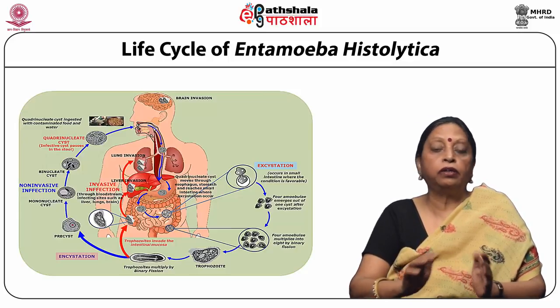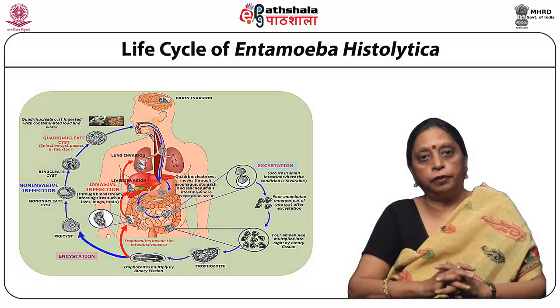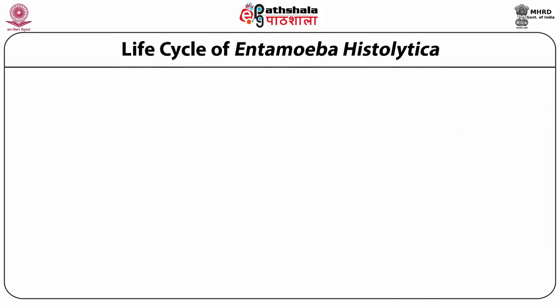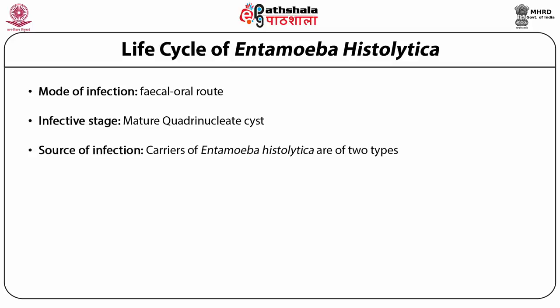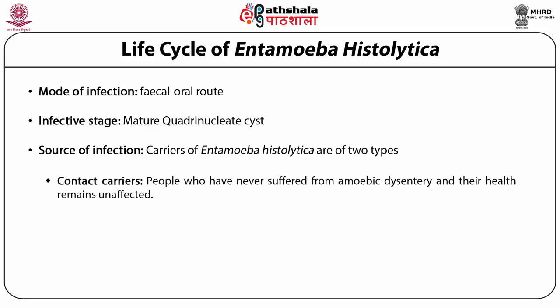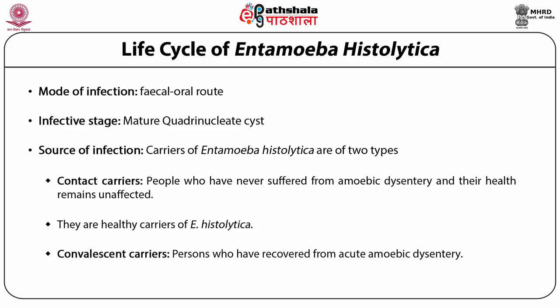The mode of infection is the fecal-oral route. The infective stage is the mature quadrinucleate cyst. The source of infection is carriers, of which there are two types: contact carriers — people who have never suffered from amoebic dysentery and whose health remains unaffected, who can shed cysts for many years — and convalescent carriers, persons who have recovered from acute amoebic dysentery.